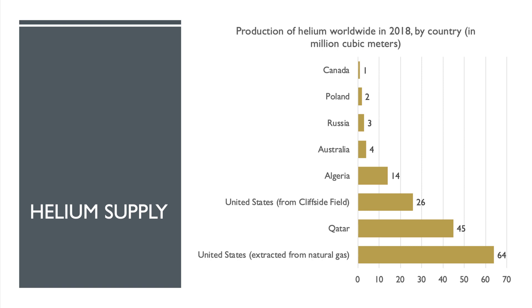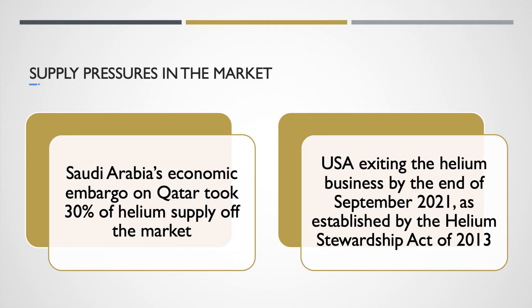The US is planning to exit the helium business by the end of September 2021. The Helium Stewardship Act of 2013 monitors the national helium reserve, and those reserves are sold off at auction — the last auction was in 2018. On the supply side, two key supply pressures are driving prices up. First, Saudi Arabia's economic embargo on Qatar took nearly one third of the supply of helium off the market — a clear fall in supply.